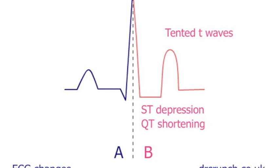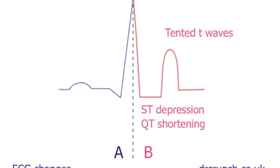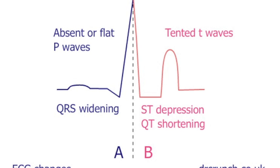'What about the late changes?' 'Well, this time imagine segment A being stretched — that's from P to S. So as you can imagine, there'd be a widened QRS, an increase in the PR interval, and flattening of the P wave.'